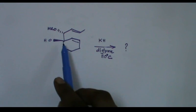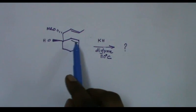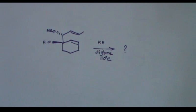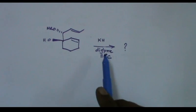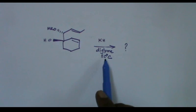When this allelic alcohol or 1,5-diene is treated with potassium hydride in diaglime as solvent at 110 degrees C, what is the product?